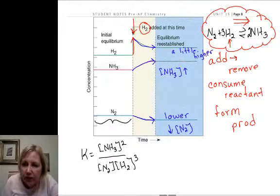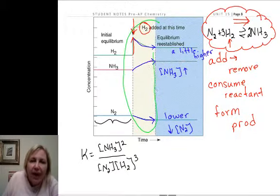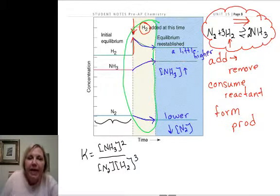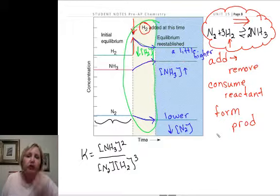What we're going to focus on is this region here. What happens to get the equilibrium back? And to get the equilibrium back, we decrease our hydrogen, we increase the ammonia, and decrease our nitrogen.